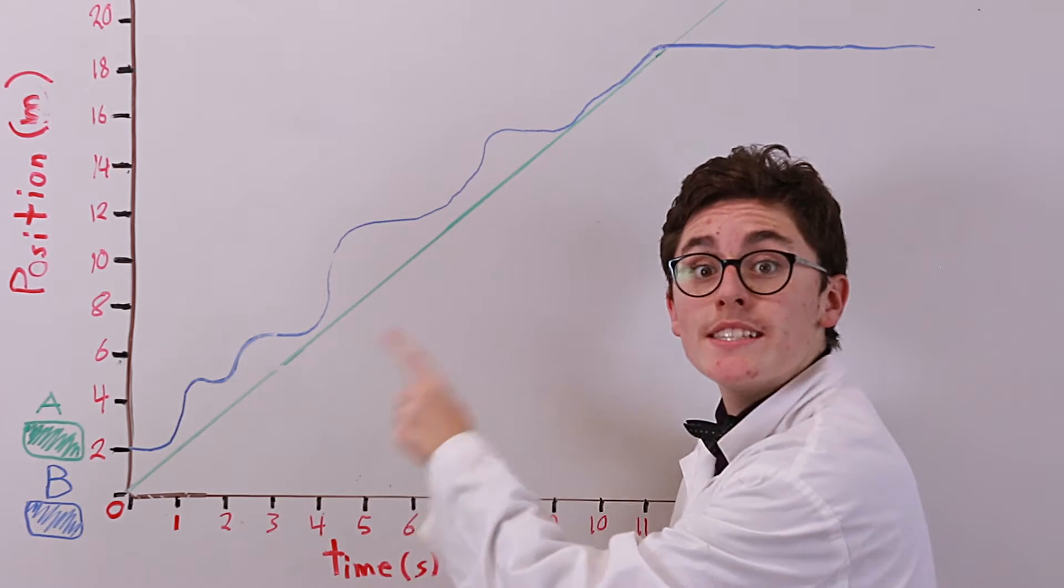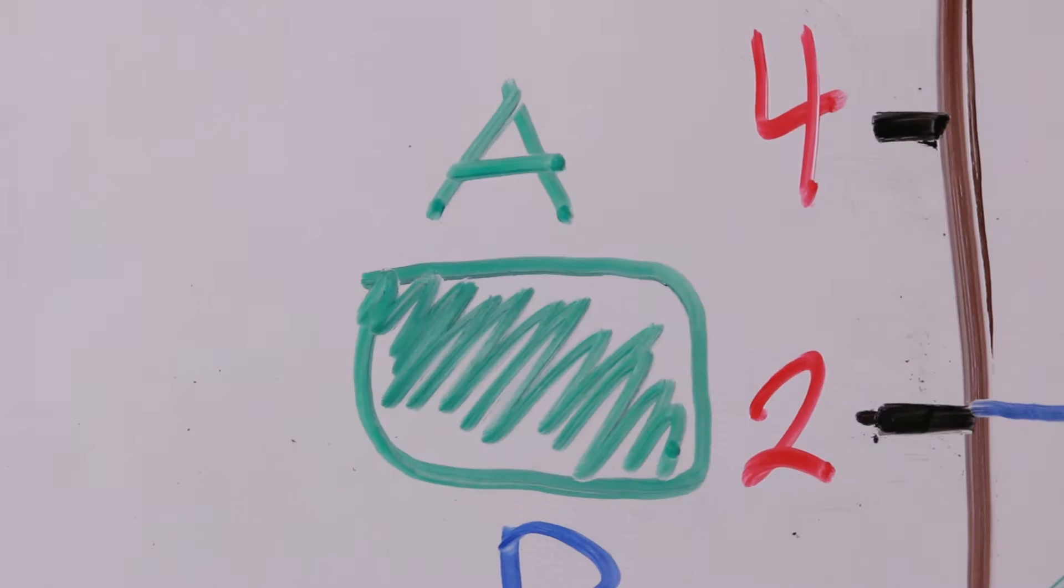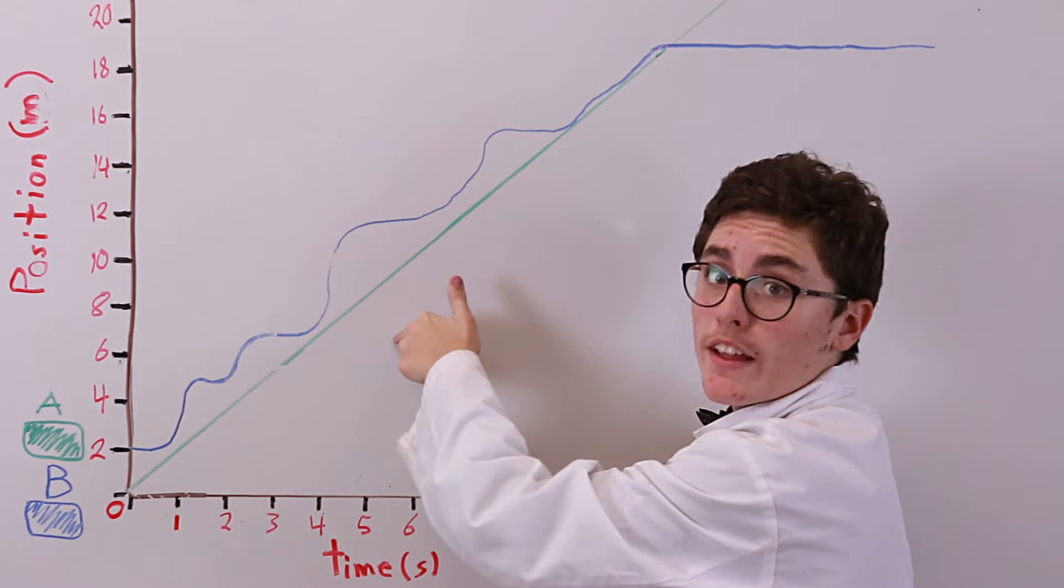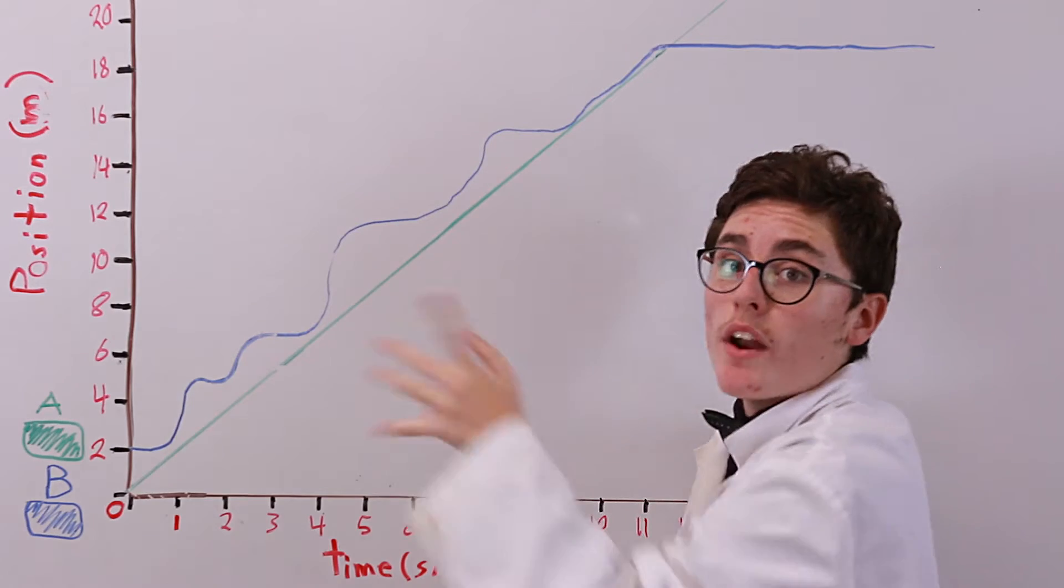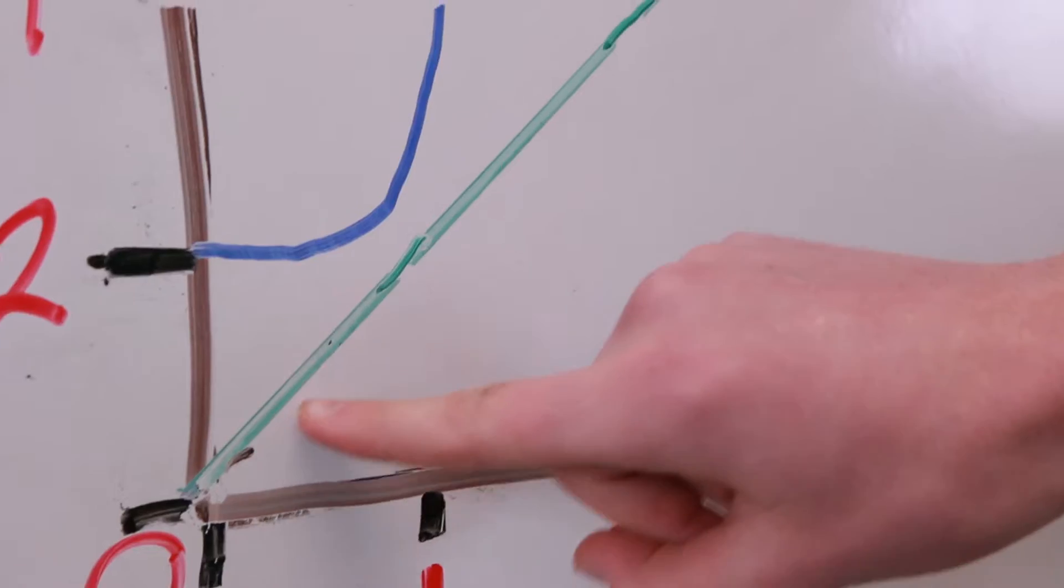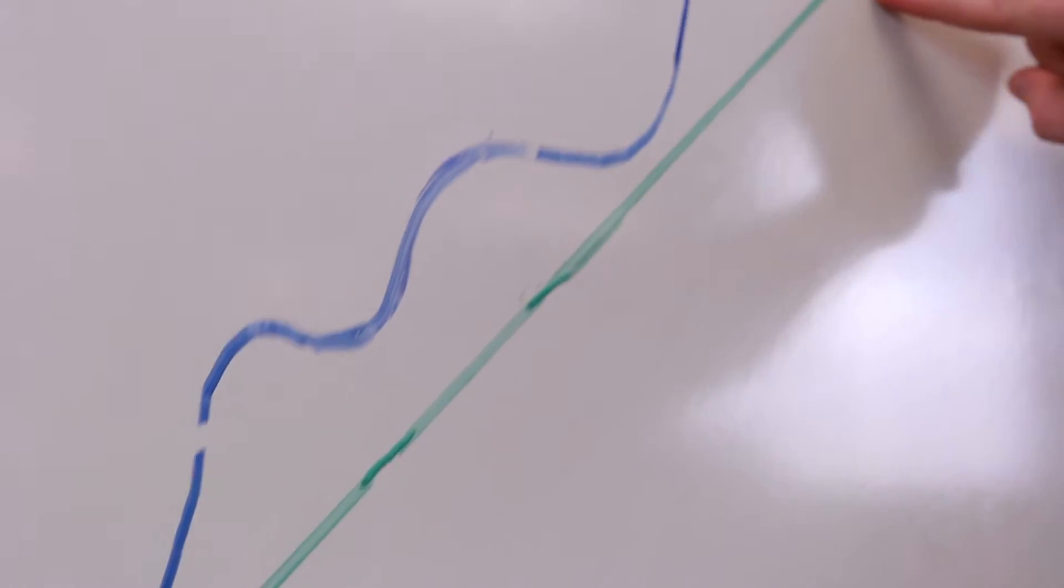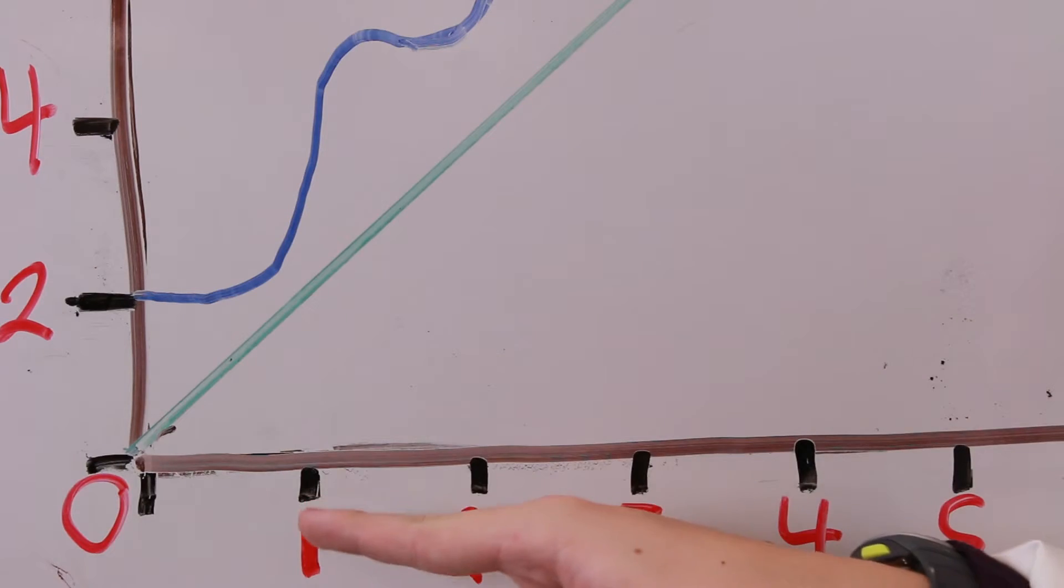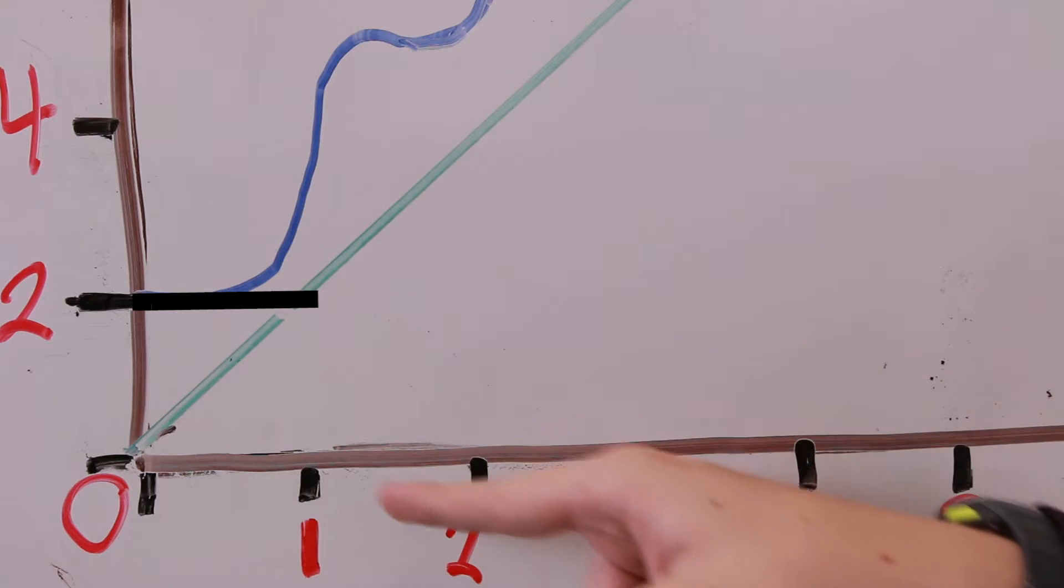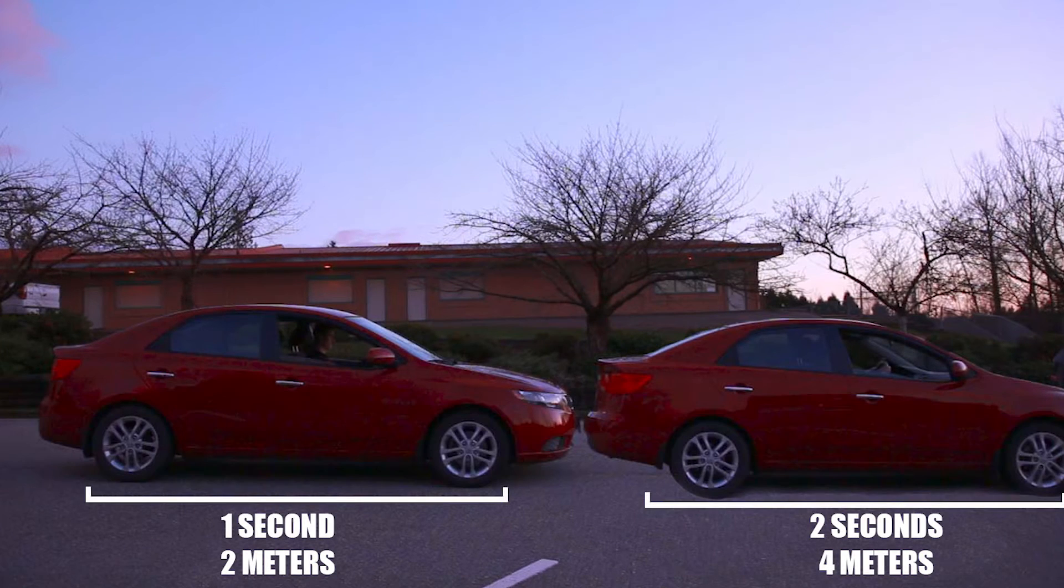As you can see here, on this position-time graph, line A represents the car shown in the clip before, and line B represents the man desperately running from the car. Now, this car maintains a constant velocity of one meter a second north. If you can see here, at one second, the car is at two meters. At two seconds, the car is at four meters.